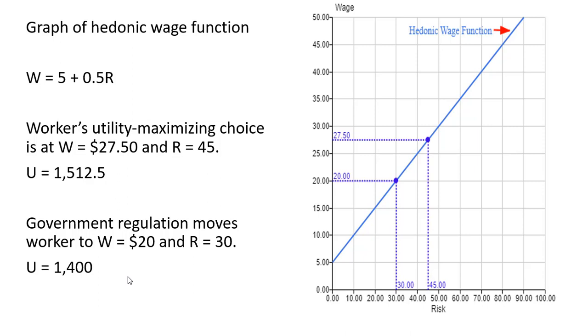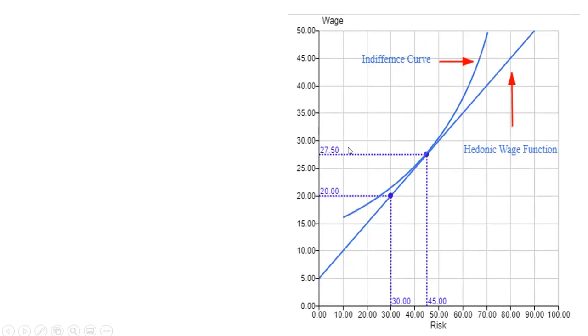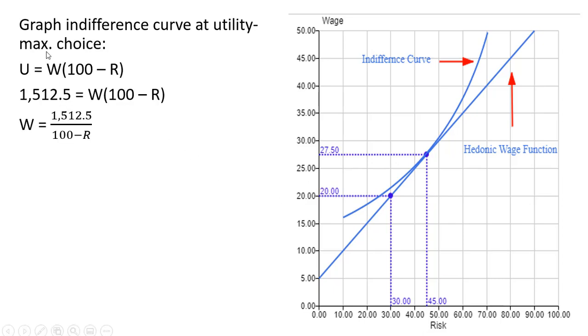Let's now graph the indifference curves. Here's what the indifference curve is going to look like when there is no government mandate. The indifference curve will be tangent to the hedonic wage function—this worker is getting on their highest indifference curve possible. To graph the indifference curve at the utility maximizing choice, we set U equal to 1512.5 and solve for W.